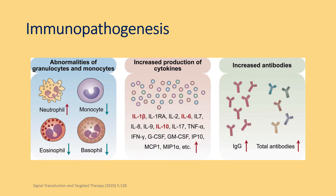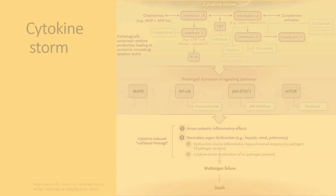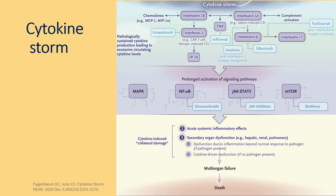SARS-CoV-2 is known to cause profound lymphopenia and relative neutrophilia. It is also associated with the release of a host of inflammatory cytokines. These cytokines — especially interleukin-1, interleukin-6, interleukin-17, and many others — cause prolonged activation of several inflammatory pathways, leading to systemic inflammatory effects, severe organ dysfunctions, and ultimately death.